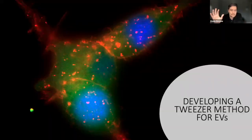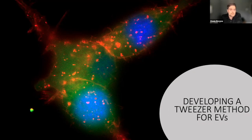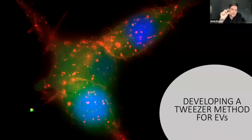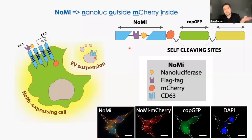Without telling you exactly what we did yet, you can see how we generated a viral construct. When we transduce cells with it, you see a very diffuse green signal — a cell-wide signal — but also very bright, nanoscopic red dots, which are where our EVs originate from. Our goal was to generate a method — a kind of tweezer method — where you pick out these red dots from the media, examine them, potentially modify them while held in your tweezer, and then put them in another solution.